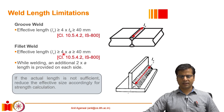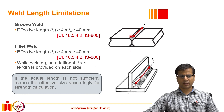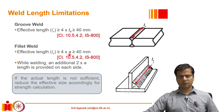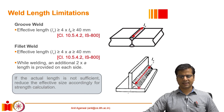If it is a fillet weld, a similar requirement applies. In a fillet weld, instead of using the throat thickness — which was the equivalent of the throat thickness in a groove weld — the requirement is that the weld length should be at least 4 times the weld size. The weld size is A, which is this dimension.